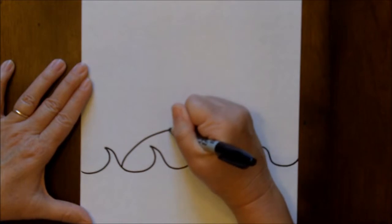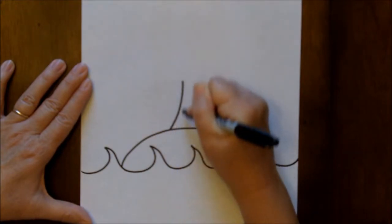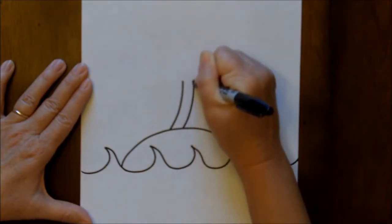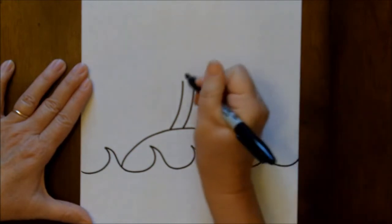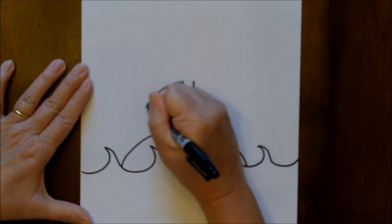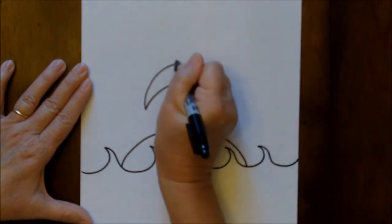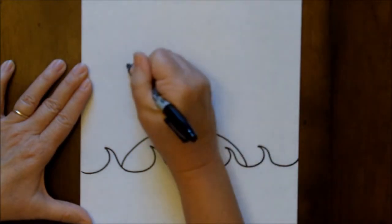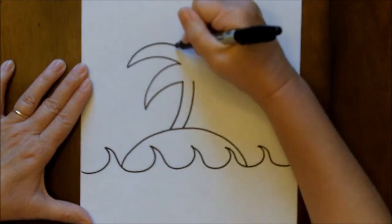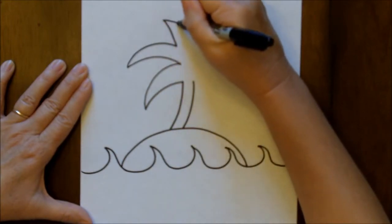For the palm tree, we are going to have it stick out right of the middle, curved lines, and the leaves are going to come out, curved line, and go in. Come out and go in. Come out and go in.